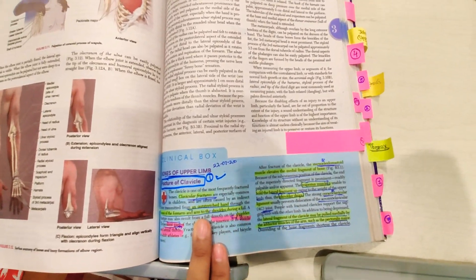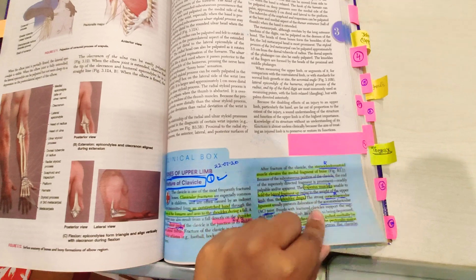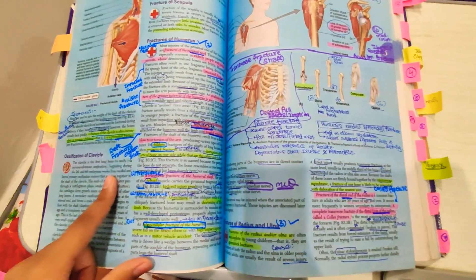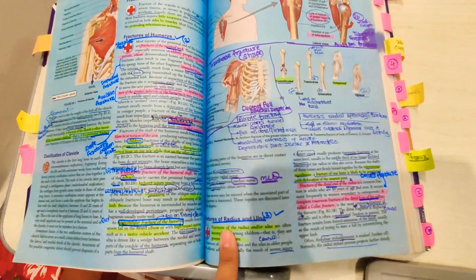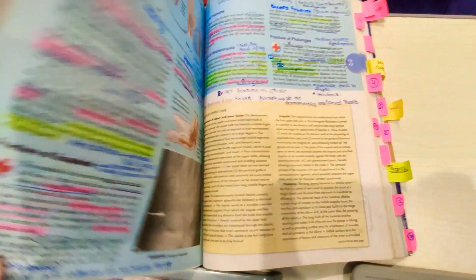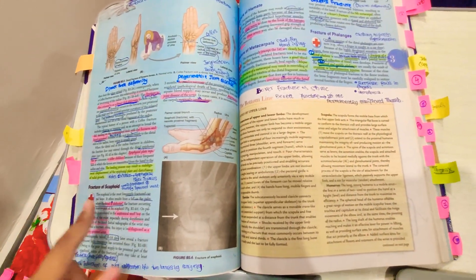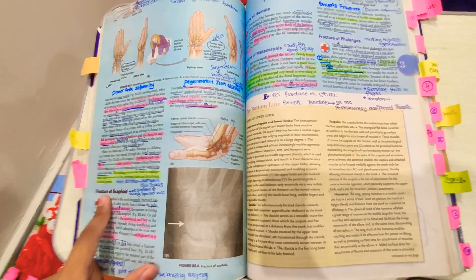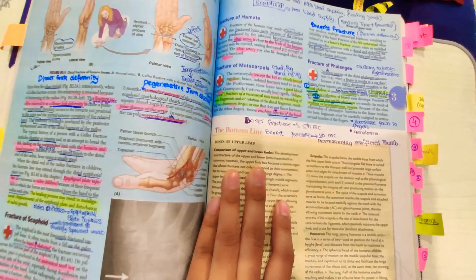First of all, we talk about bones: fracture of clavicle, then fracture of humerus. Fractures are all very important. Fracture of radius and ulna, Colles fracture, Smith's fracture - very important, its difference - and then fracture of scaphoid.